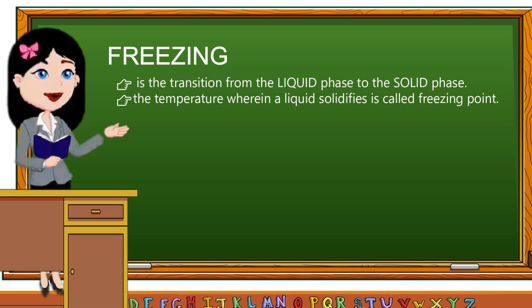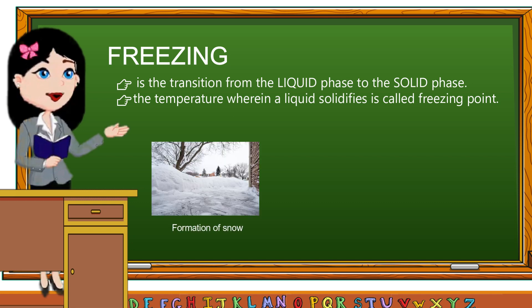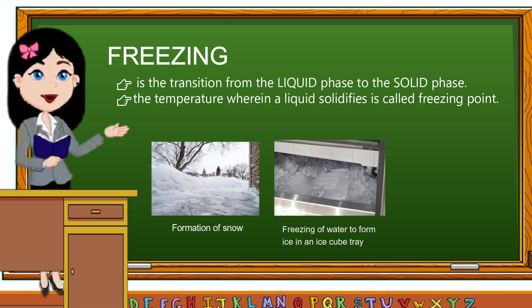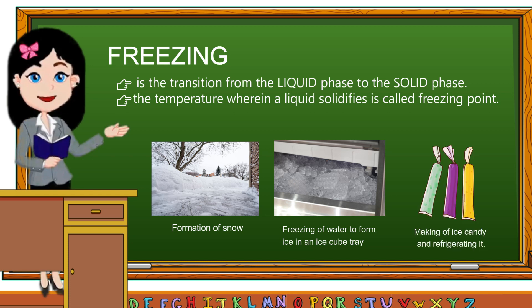The temperature wherein a liquid solidifies is called freezing point. Formation of snow, freezing of water to form ice in an ice cube tray, making of ice candy and refrigerating it, and solidification of melted candle wax are examples of freezing.